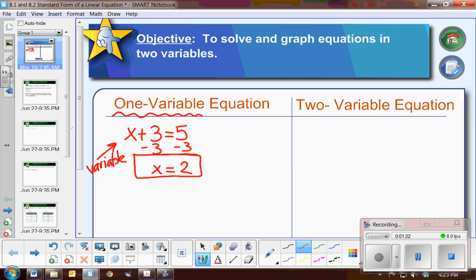Now if I wanted to graph this solution, I would graph it on a number line. Not that we did this, but I know you've done this before. And at 2, I would put a point indicating that this is the solution to the problem. And then we could check by substituting 2 in the original problem.